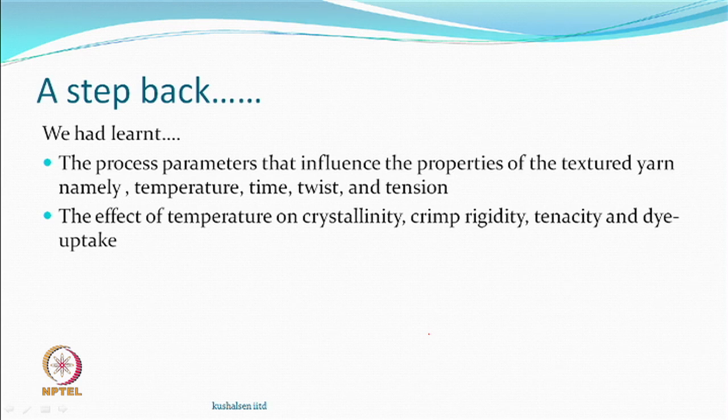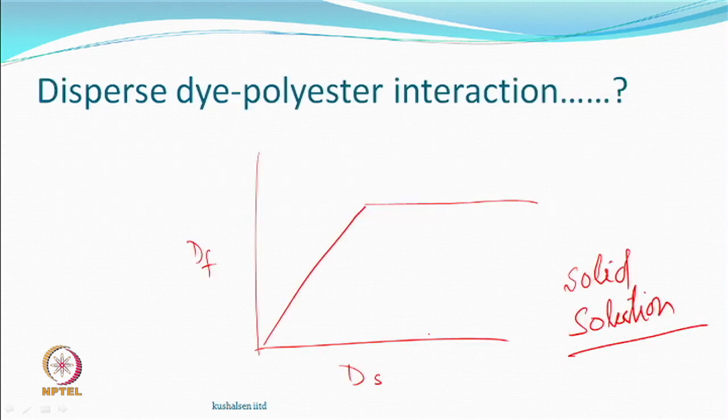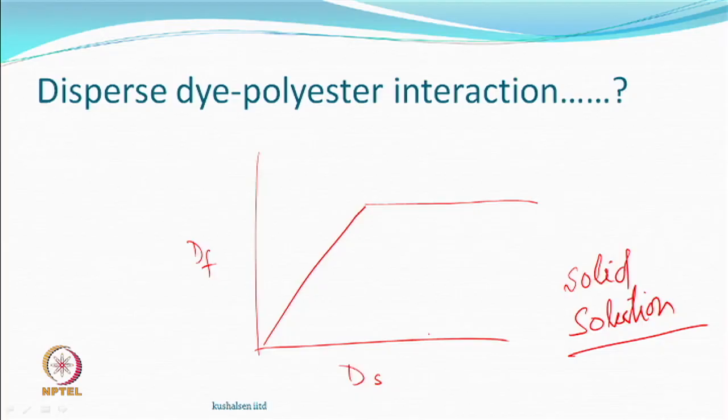We did study the effect of temperature on crystallinity, crimp rigidity, tenacity, and dye uptake. As far as dyeing is concerned, we were talking about a dispersed dye on a polyester where the interactions are not dependent upon the end group ionic or cationic nature. It is basically dependent on how much amorphous content is there, and that is what we believe happens during texturing — the changes in crystalline content and amorphous content.